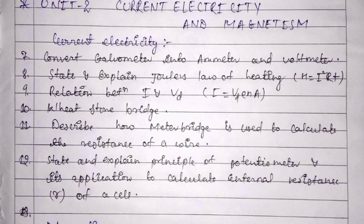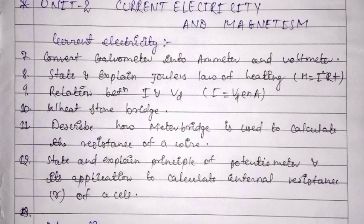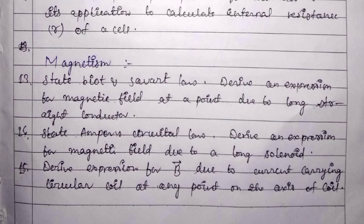Other important current electricity derivations include: the balance condition for Wheatstone bridge, how a meter bridge is used to calculate the resistance of a wire, and state and explain the principle of a potentiometer along with its applications — including comparing EMFs of two cells and finding the internal resistance of a cell.